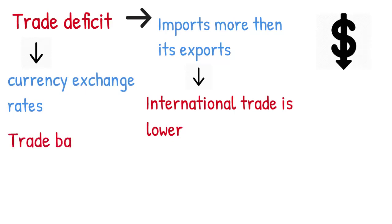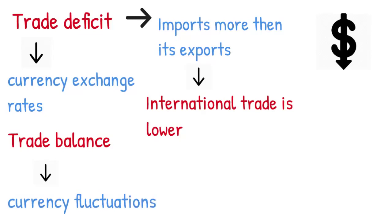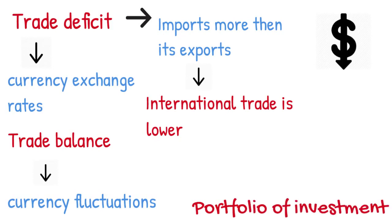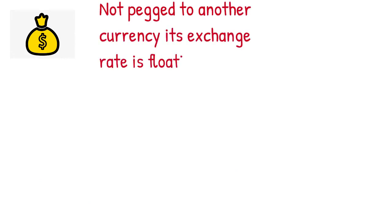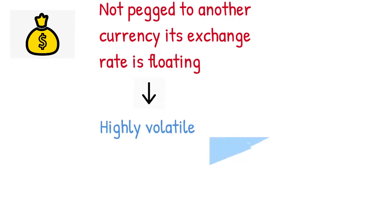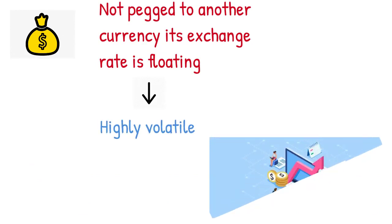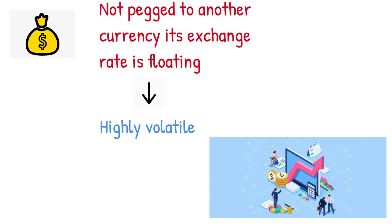While trade balances highly affect currency fluctuations in most cases, there are a few factors countries can manage that make trade balances less influential. Countries can manage a portfolio of investments in foreign accounts to control the volatility and movement of the currency. Additionally, countries can also agree on a pegged currency rate that keeps the exchange rate of their currency constant at a fixed rate. If a currency is not pegged to another currency, its exchange rate is considered floating. Floating exchange rates are highly volatile and subject to daily trading whims within the currency market, which is one of the global financial market's largest trading arenas.